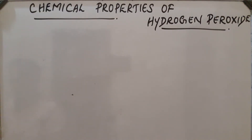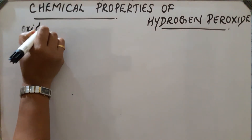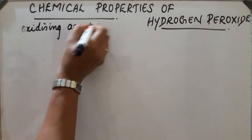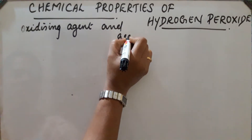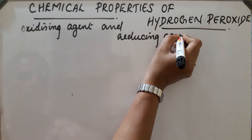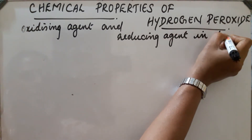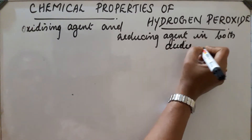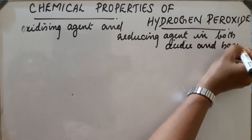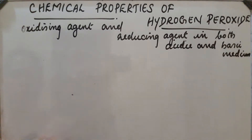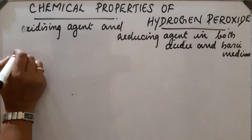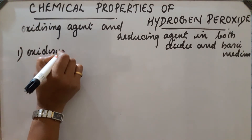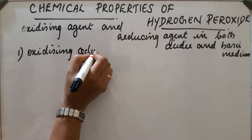Chemical properties of hydrogen peroxide: H₂O₂ acts as both an oxidizing agent and a reducing agent in both acidic and basic medium.